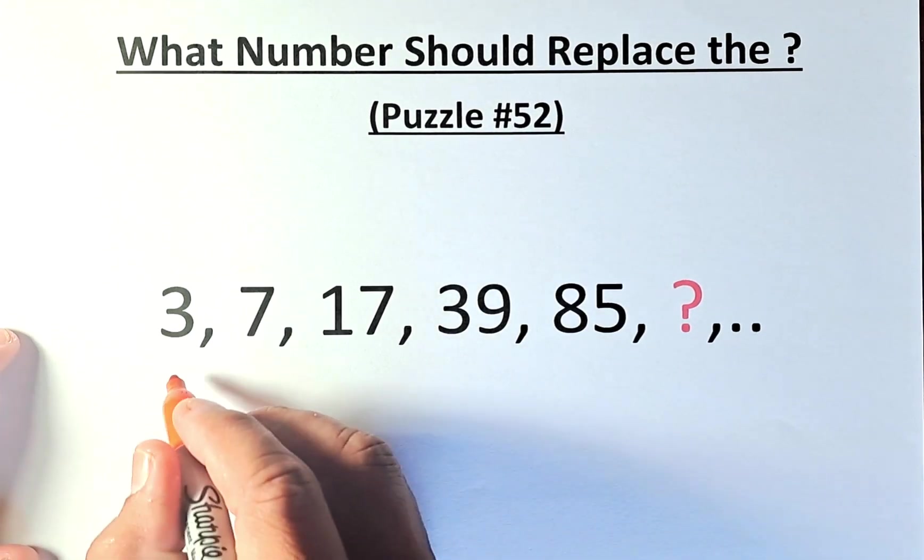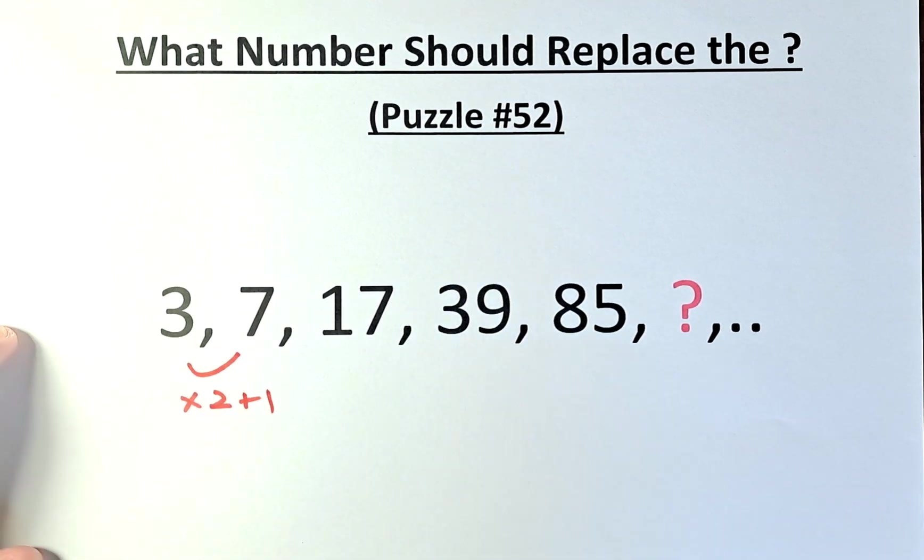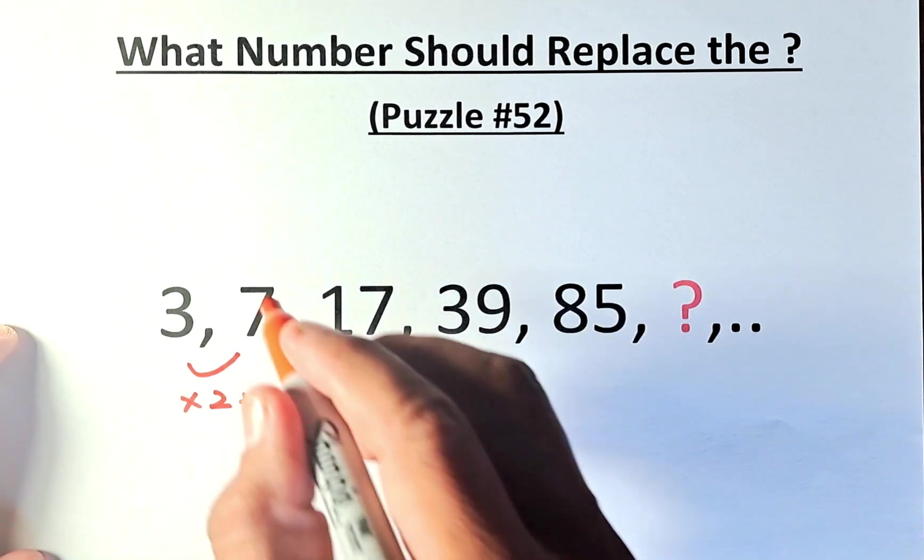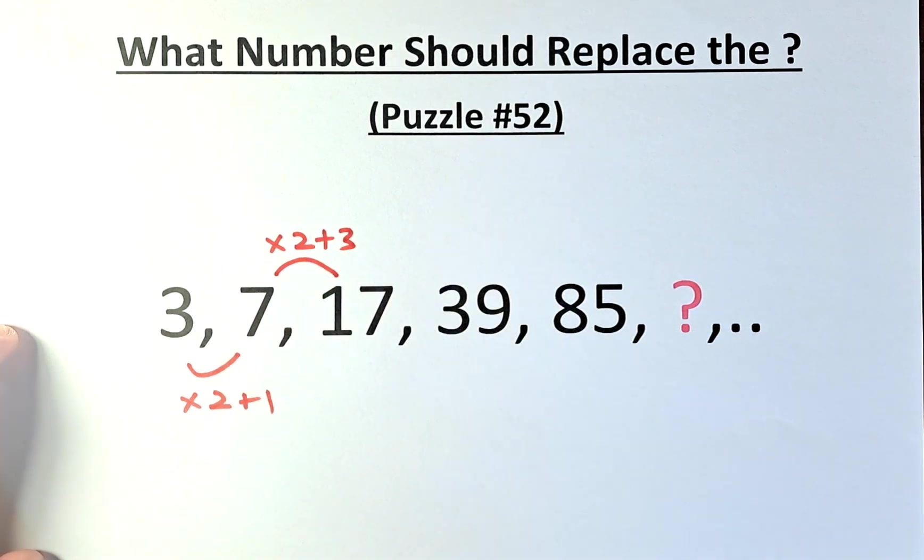From 3 to 7, we're going to multiply by 2 and add 1. 3 times 2 is 6. 6 plus 1 will give us 7. Similarly, from 7 to 17, we're going to do the same thing. Multiply by 2, but this time add 3. So 7 times 2 is 14. 14 plus 3 is 17.